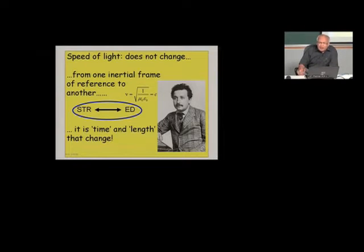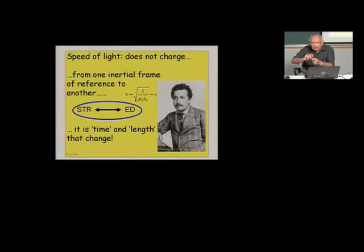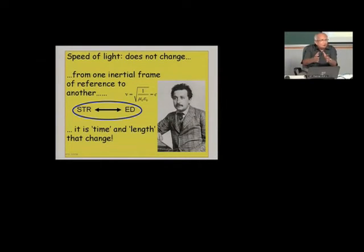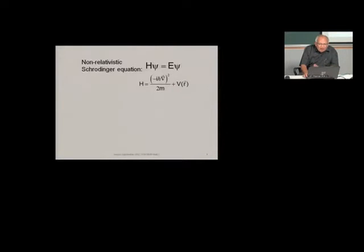Likewise, relativity is applicable to everything, not just to objects which are moving at relativistic speeds. If an object is at rest, it doesn't mean it is free from relativistic effects. The spin-orbit splitting between the 3p₃/₂ and 3p₁/₂ levels of the sodium atom will hold good even if you bring it to a halt — as in laser cooling. There is no way you can account for the spin of an electron without relativistic effects.